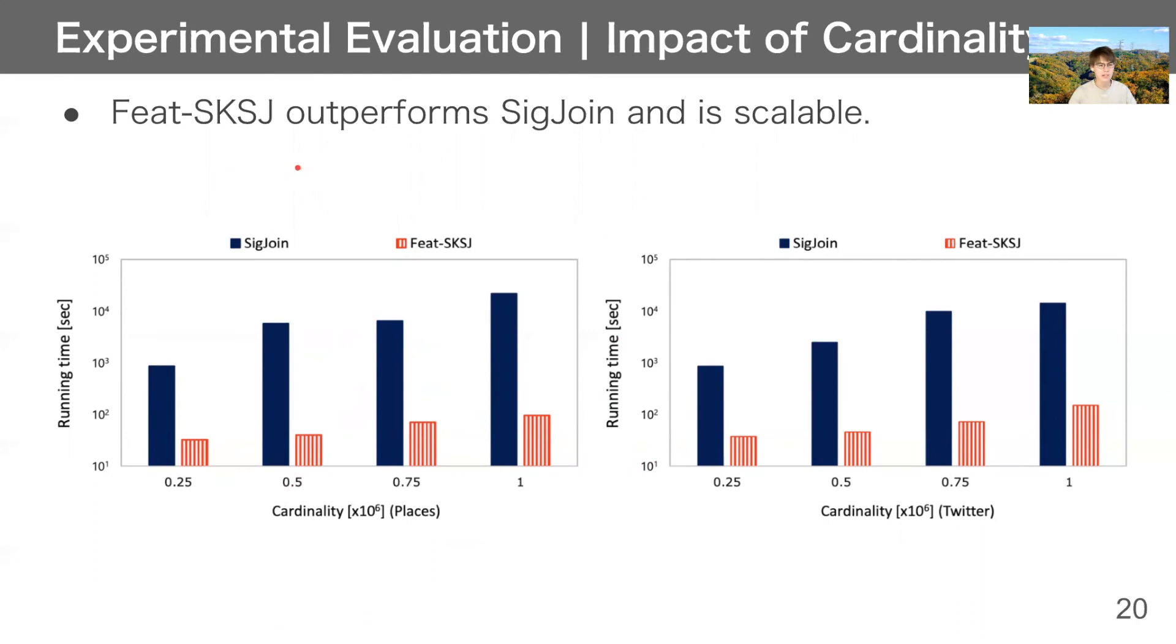We confirm impact of cardinality. This graph shows x-axis is cardinality and y-axis is running time. As you can see, Feat-SKSJ outperforms SicJoin and is scalable.